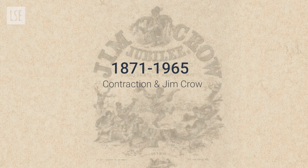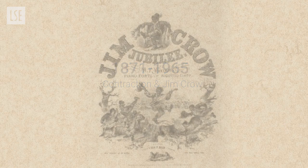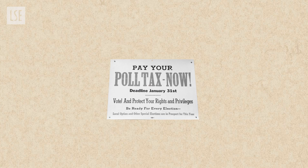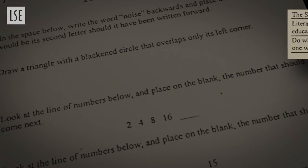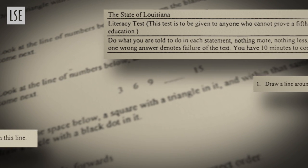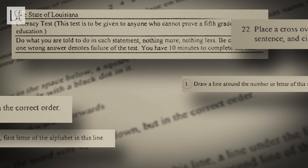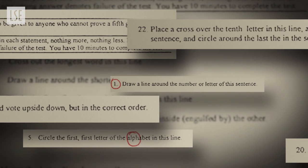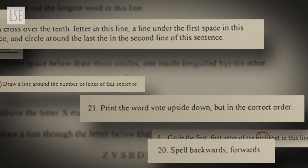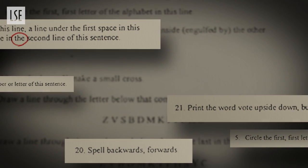States couldn't formally pass laws saying African Americans could no longer vote, because a constitutional amendment guaranteed them full citizenship. So instead they passed things like poll taxes — requiring payment to vote — and literacy and comprehension tests that were incredibly difficult, even for literate people, and were unevenly enforced. Poor whites might pass or receive informal exemptions, while African Americans were held to the highest standards on tests designed to be essentially impossible.